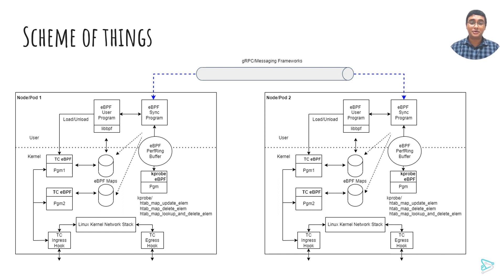For our current use case we are using kprobes only for the hash map entry points, though of course it can be changed as per need. One great thing about our implementation is that it is completely unaware of any map details or semantics, hence it can be reused by different applications.